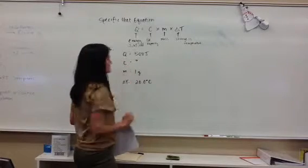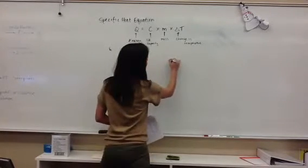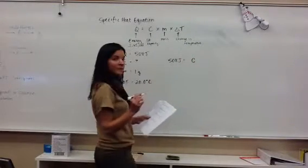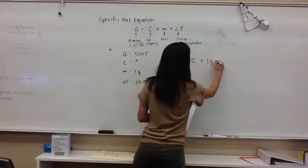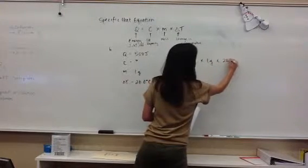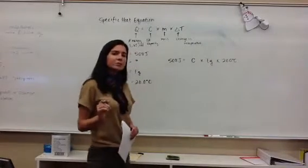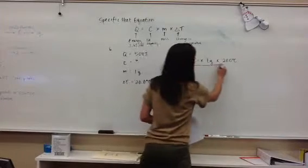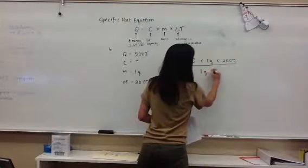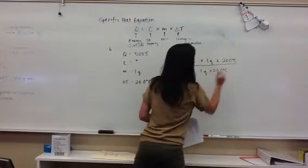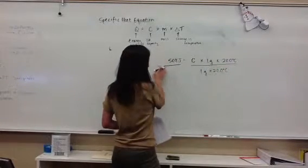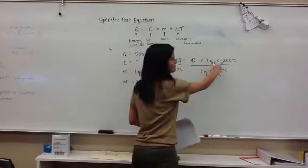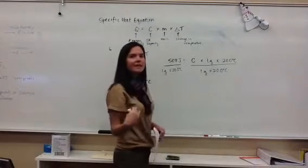And we're going to be solving for C. So, we're going to use our equation. 508 joules equals C, because that's what we need to find out, times 1 gram times 20 degrees Celsius. So, we need to rearrange this equation so that C is by itself. So, we will divide both sides of the equation by 1 gram and 20 degrees Celsius. If it's easier for you to multiply this first and then divide, that's fine as well.